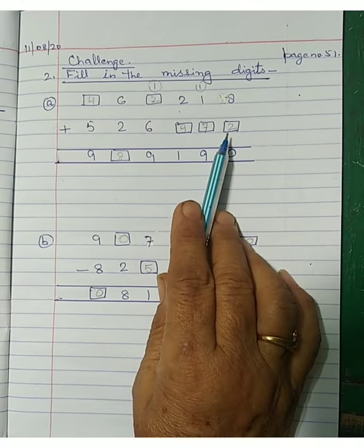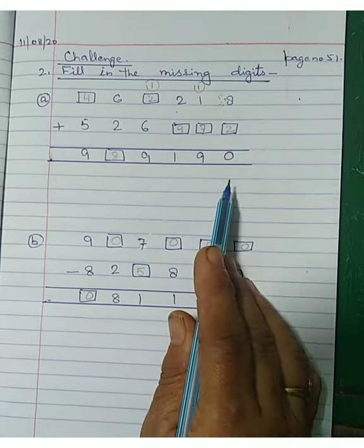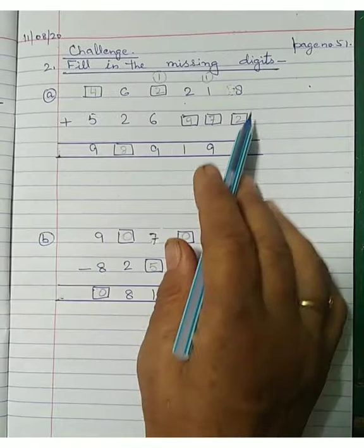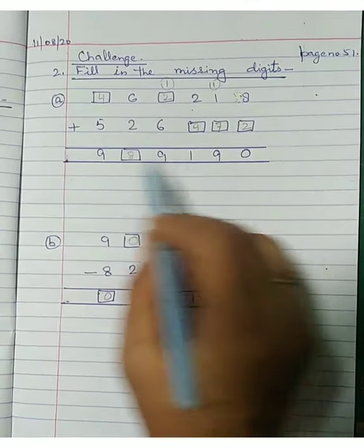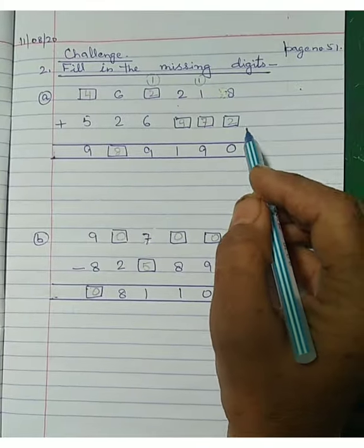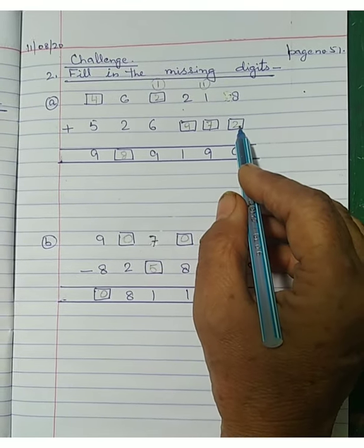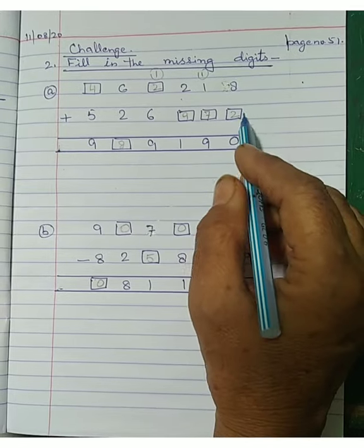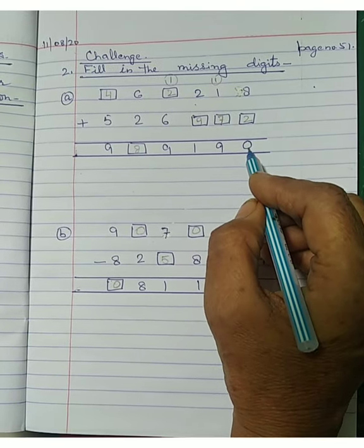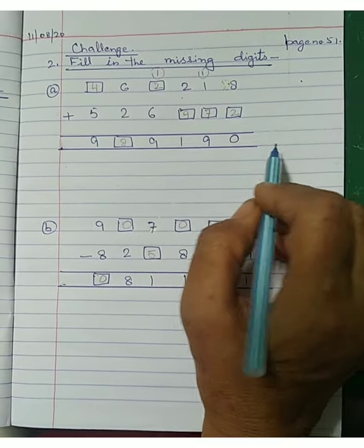Today I will learn to fill in the missing digits — in addition and in subtraction. First we take addition. If the missing number is in the answer, it is simple. And if there are missing addends, if the missing number is missing, then we will subtract the given number from the answer.